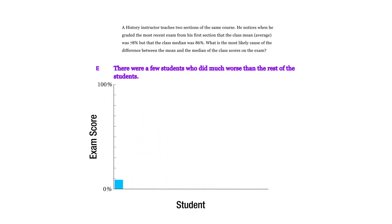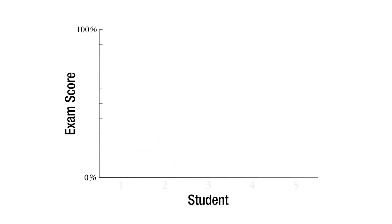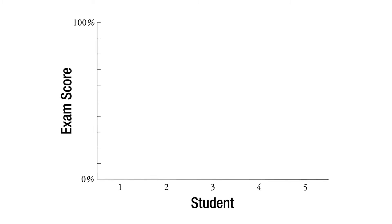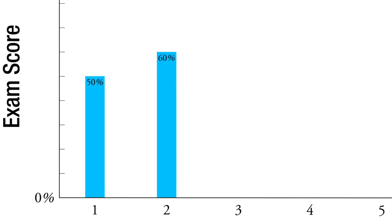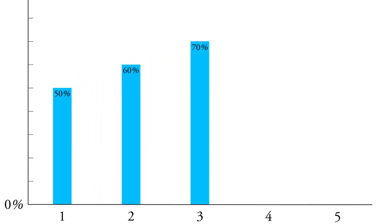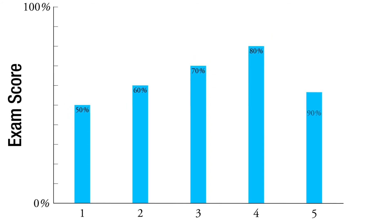We can imagine a scenario where we have five students in a class. The first one got a 50, the second one got a 60, the third one got a 70, the fourth one got an 80, and the fifth one got a 90.